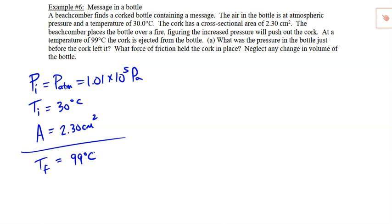And we want to know what was the pressure in the bottle just before the cork left. So P final is what we're looking for. We need to always convert our temperatures into Kelvin. So 30 plus 273 will give you 303 Kelvin. And 99 plus 273 is going to give you 372 Kelvin.